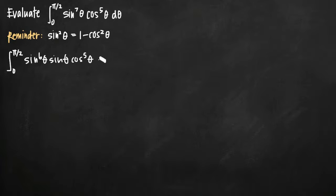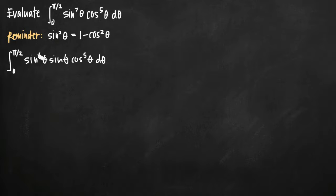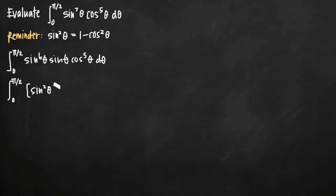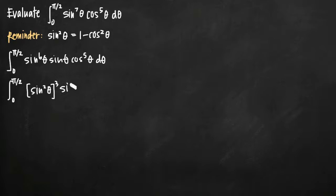Remember you only do this to one of them, either the sine or the cosine. We just took one out so that we have sine to the sixth of theta times sine of theta, which equals sine to the seventh of theta — what we had. We just factored one out so that we were left with an even exponent, six being an even number. And now we want to rewrite sine to the sixth as sine squared of theta raised to the third power, leaving sine of theta and cosine to the fifth of theta d theta.